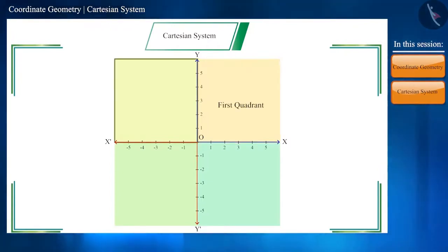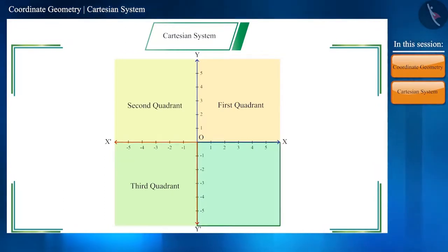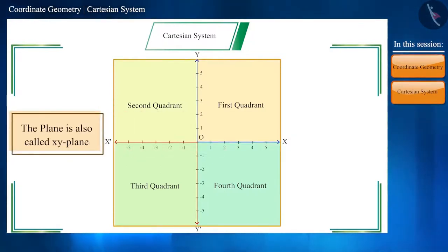Second part is second quadrant. Third part is third quadrant. And fourth part is called fourth quadrant. And the plane is also called the XY plane.